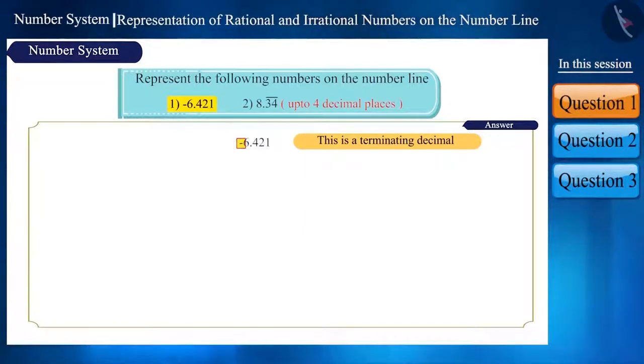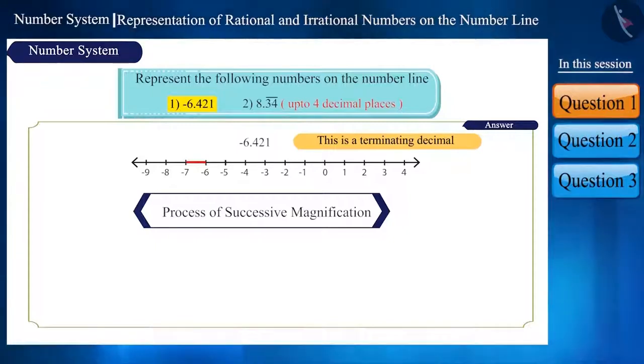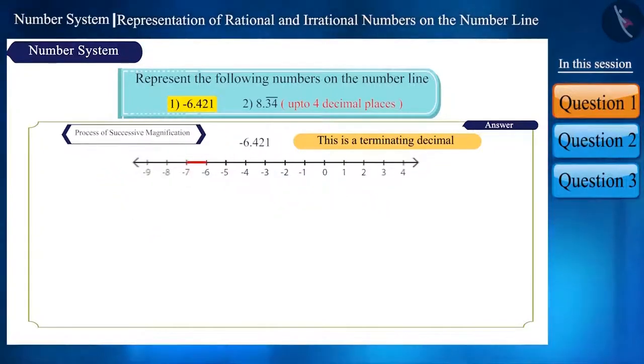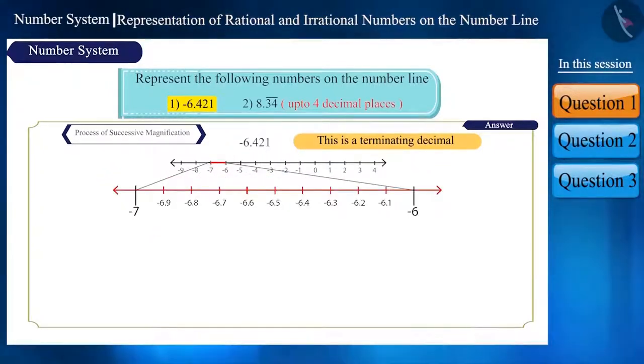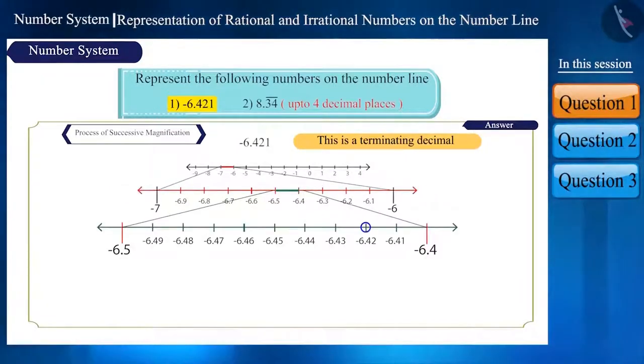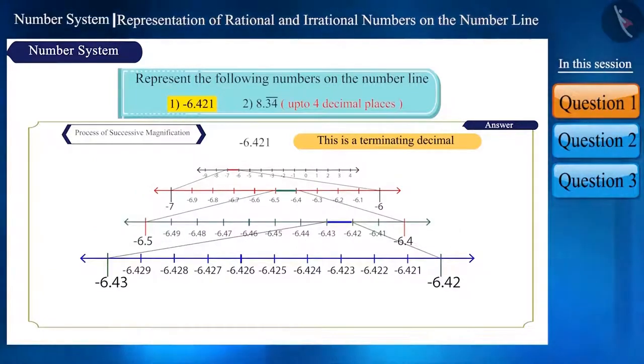Don't get confused seeing the negative sign. This number will lie between -6 and -7 on the number line. We will represent this number using the process of successive magnification like this. Now the number will lie between -6.42 and -6.43. Here.